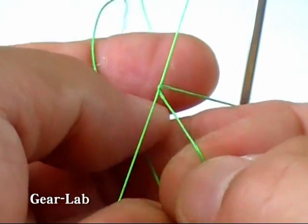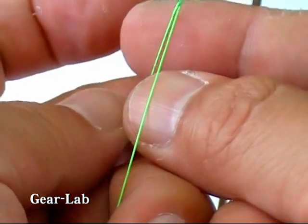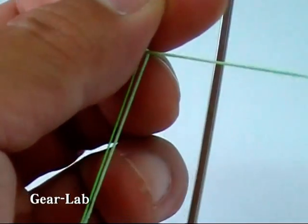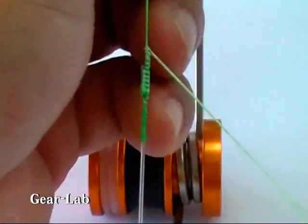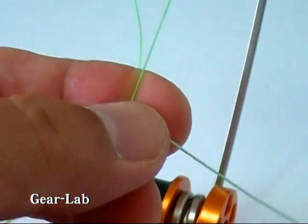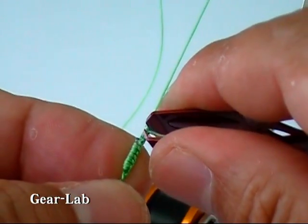Lastly, thread the end through the loop twice and end the knot. Pull the line to the right side. Cut the end of the PE line.